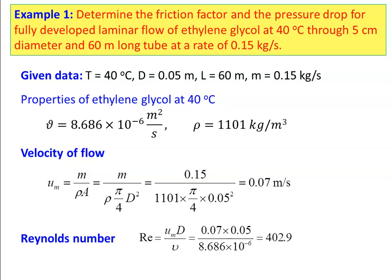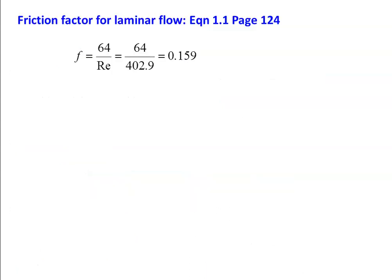Reynolds number RE = U·D/ν = 0.07 × 0.05 / (8.686 × 10⁻⁶) = 402.9. Since RE < 2300, the flow is laminar. Friction factor for laminar flow (equation 1.1, page 124 of HMT data book): f = 64/RE = 64/402.9 = 0.159.